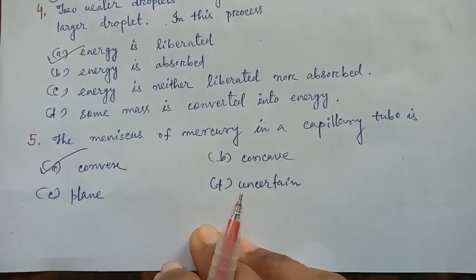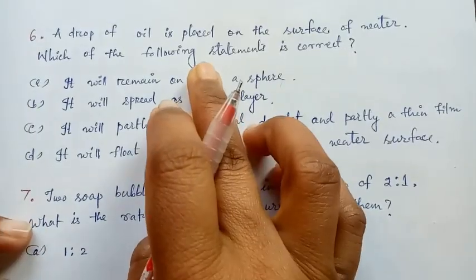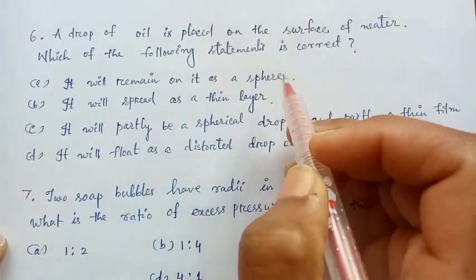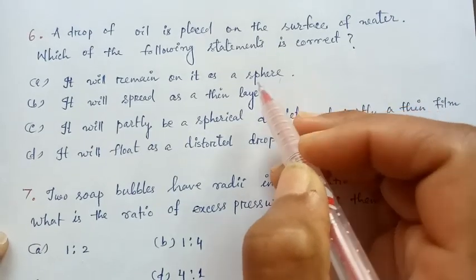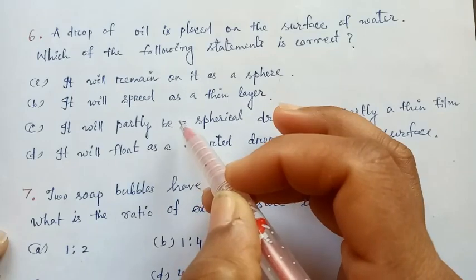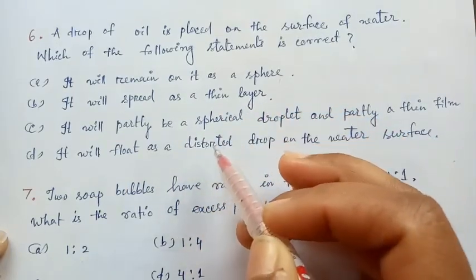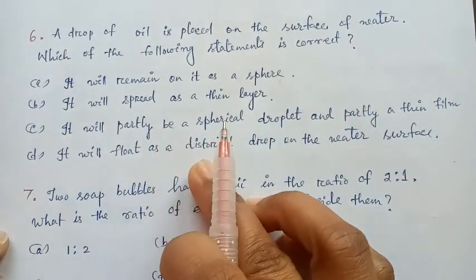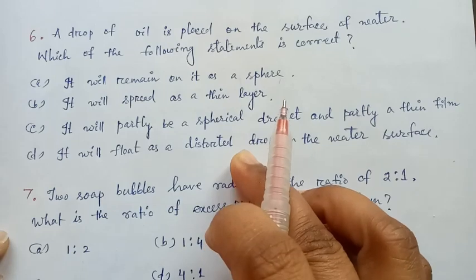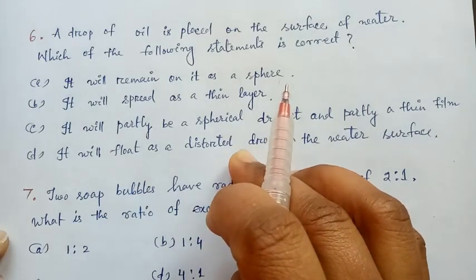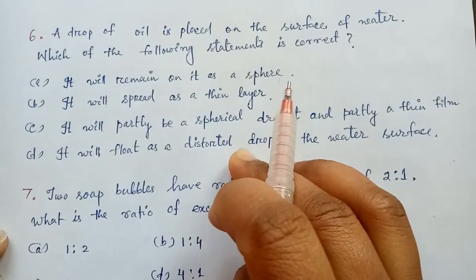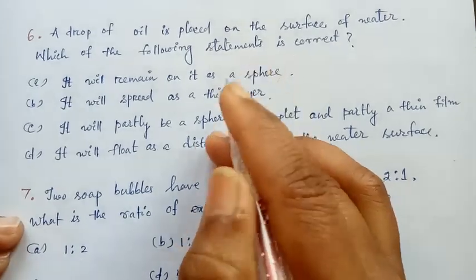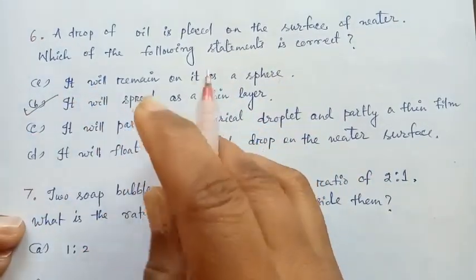Next question: a drop of oil is placed on the surface of water. Which of the following statements is correct? It will remain as a sphere, it will spread as a thin layer, it will partly be a spherical droplet and partly a thin film, or it will float as a distorted drop on the water surface. The surface tension of oil is less than that of water, so the oil spreads as a thin layer. Option B is the correct answer.